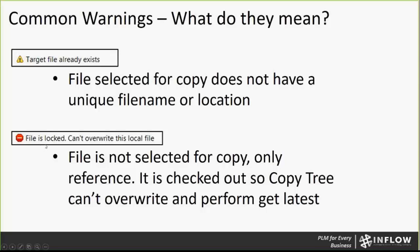Another warning you might see is 'file is locked, can't overwrite this file.' In this case, I got this warning because the file was checked out by someone else. The file is not being selected for copy — it's only being selected as a reference. So if it's checked out, what CopyTree is saying is that it can't overwrite that file and perform get latest. Since you're not copying this file, you're not actually even adding it, so it shouldn't be a problem. But if you were trying to copy it, this would not let you go forward. That is where you would want to get that reference file checked in before performing your CopyTree.